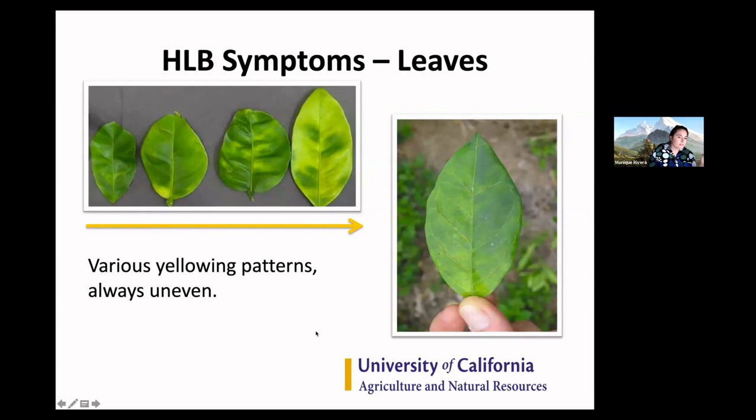One of the things that really makes HLB difficult is that the symptoms — and this is similar to COVID-19, which is why I thought this comparison would be useful — are really not 100% indicative that you have HLB. There are other diseases and nutrient deficiencies that look like this. HLB clogs the arteries and creates an imbalance, and that's essentially what you're seeing with the leaves.